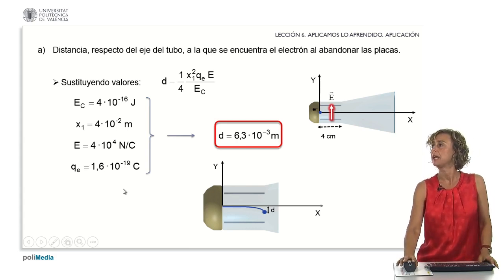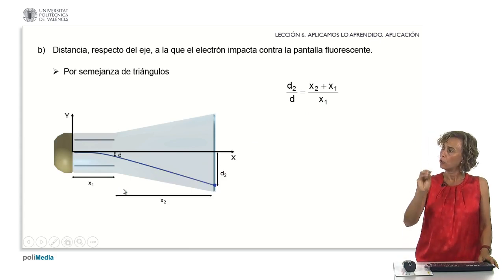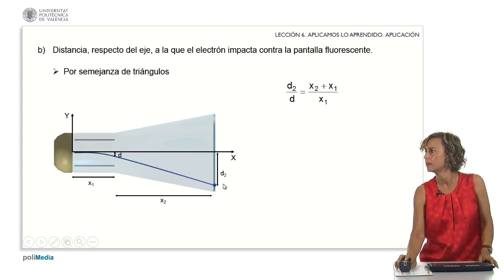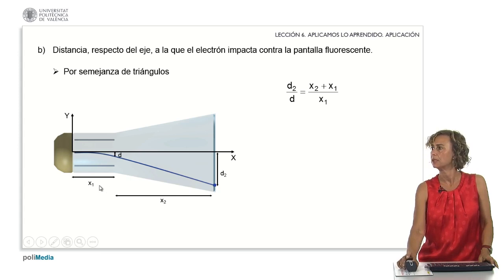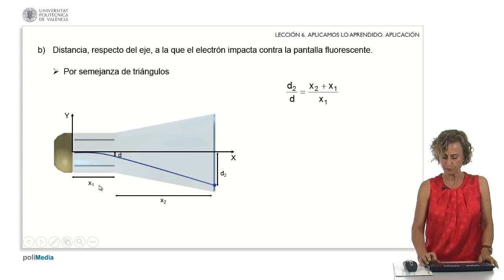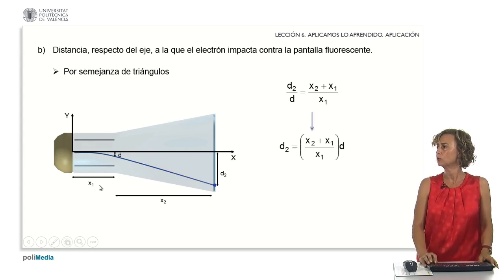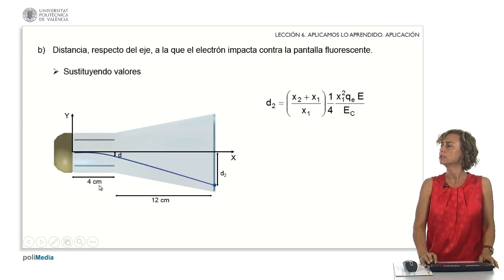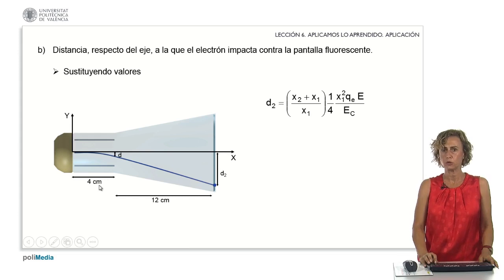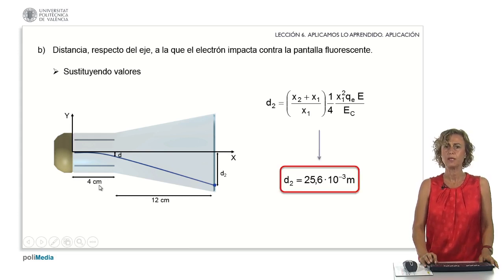We still need to determine the distance at which the electrons hit the screen. The electrons impact against the fluorescent screen, so we are asked to calculate d sub 2. By triangle similarity, we see that d sub 2 over d equals (x sub 2 plus x sub 1) over x sub 1. Clearing d sub 2 and substituting d that we had obtained previously, we substitute values for x sub 1 and x sub 2 which the problem statement gives us. We finally obtain that d sub 2 is 25.6 times 10 raised to minus 3 meters.